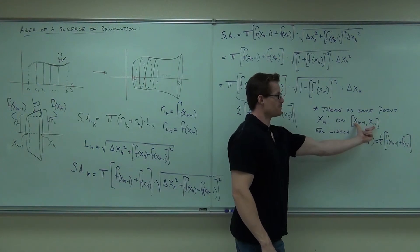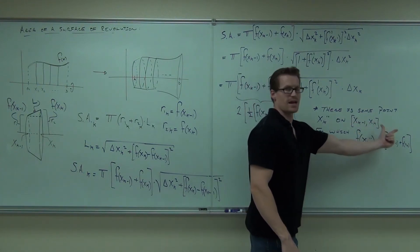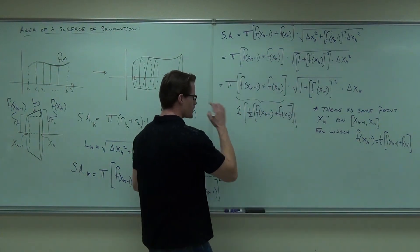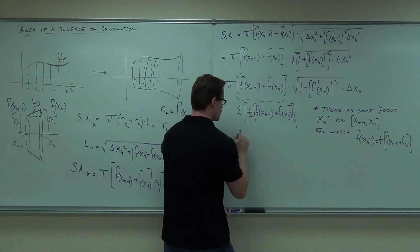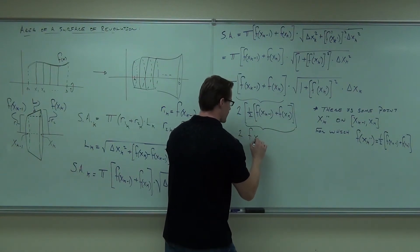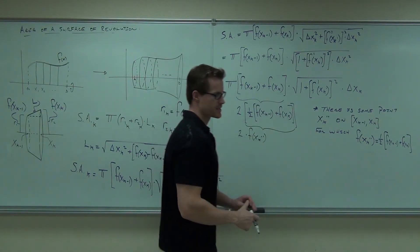So that's what that says. It says that there's some point that I can plug in. It's between here, and when I plug it in, it gives me the average height, because f is continuous. It has to happen. So I'm going to let this become 2 times f of xk dot dot.